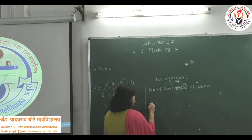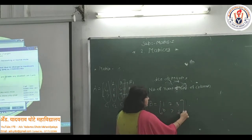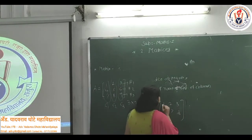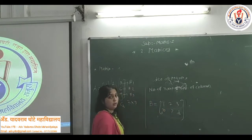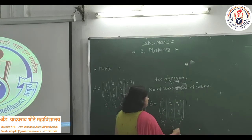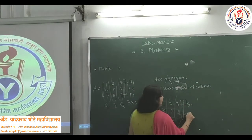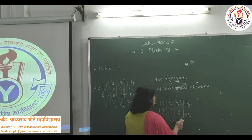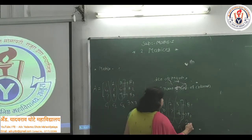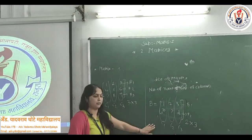Let us take another example. Consider the matrix: 1, 2, 3, 0, 7, 8. See here — what is the order of that matrix? In that matrix, there are 2 rows (R1 and R2) and 3 columns (C1, C2, C3). Therefore, we can write the order of this given matrix is 2 by 3.